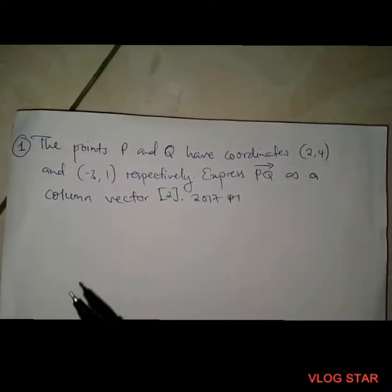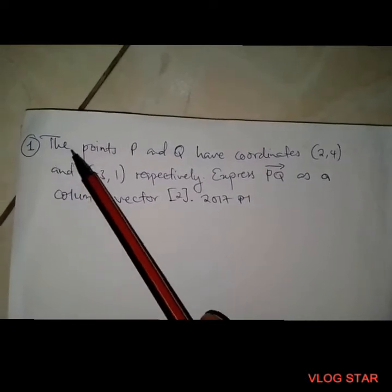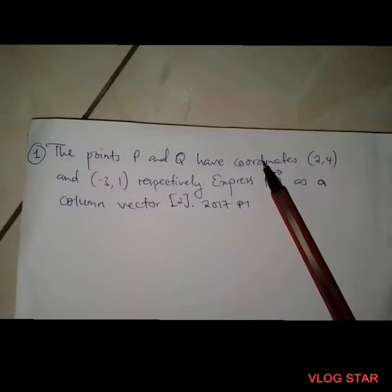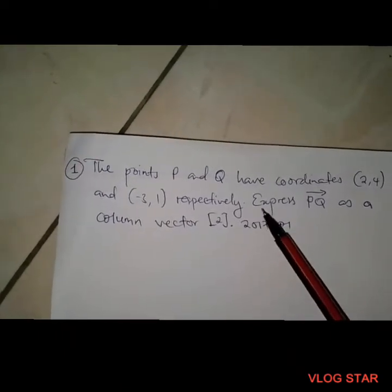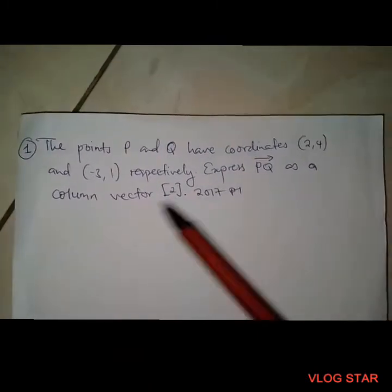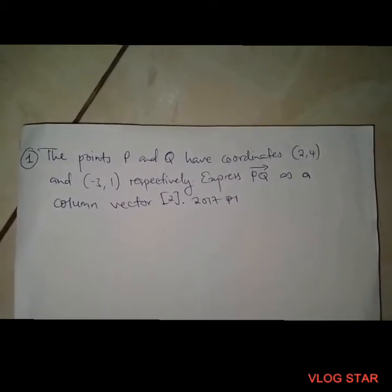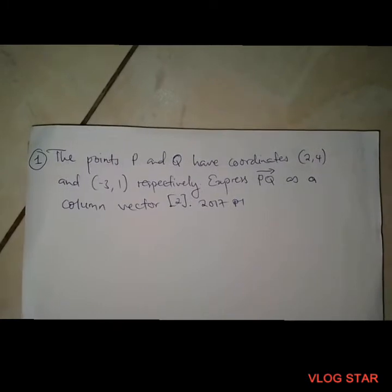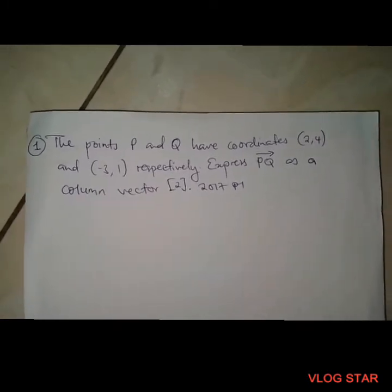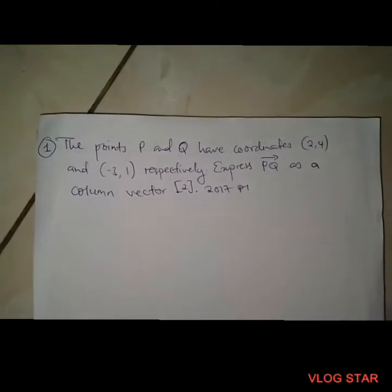Let's take a look at this question from vectors, 2017 Paper 1. The points P and Q have coordinates 2,4 and -3,1 respectively. Express PQ as a column vector. This question is from vectors and phrased for Paper 1, so no calculators are needed — practice using your mind.